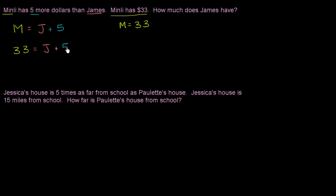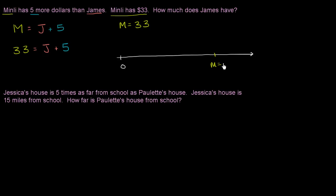Now we just need to figure out how much money James has. I encourage you to pause the video and think about it on your own. One way to visualize this is on a number line. Let's say this is zero, and Min Lee has $33 — that point is up here. J is the amount James has, and if we add five to J, we get to 33.